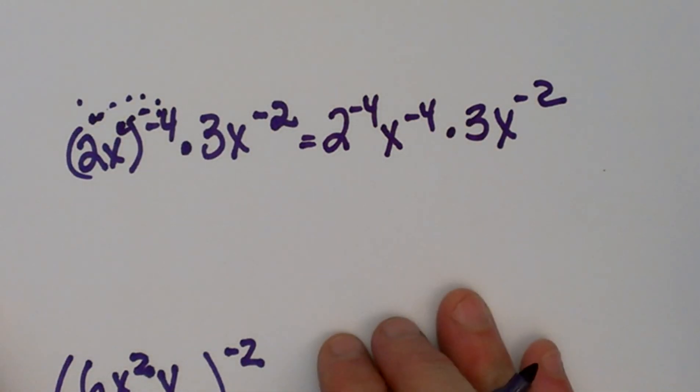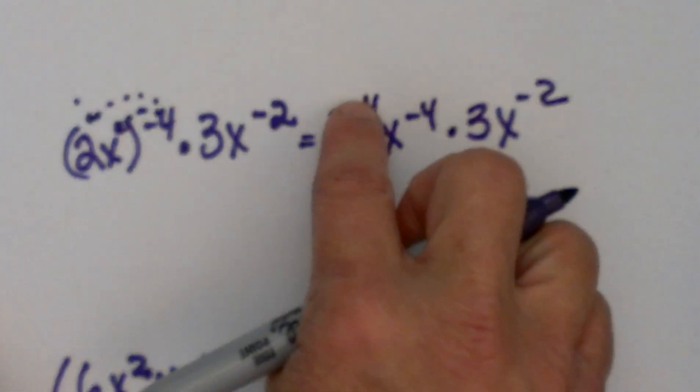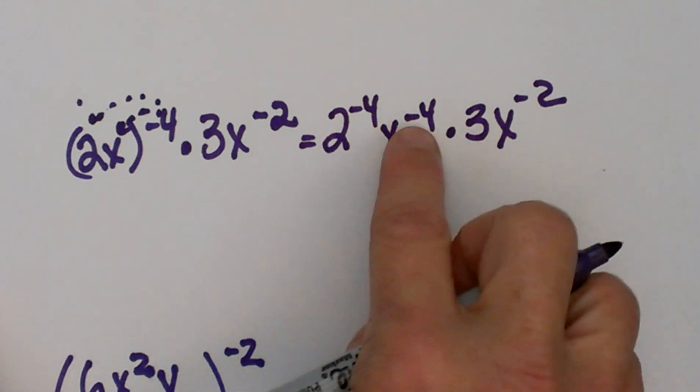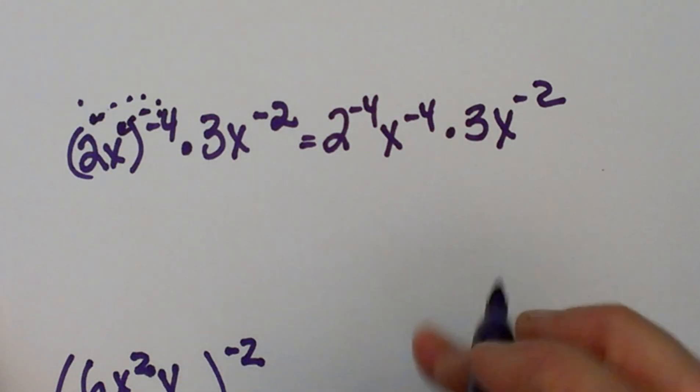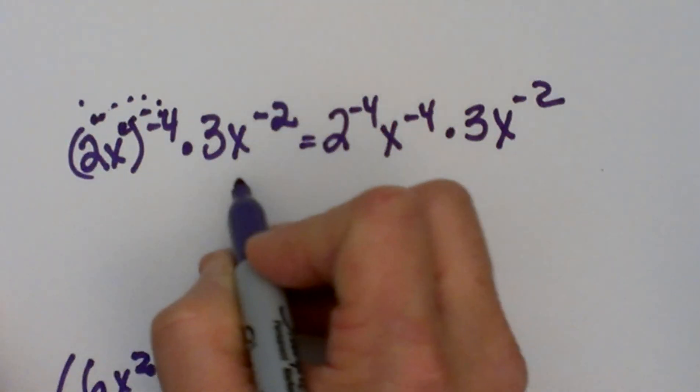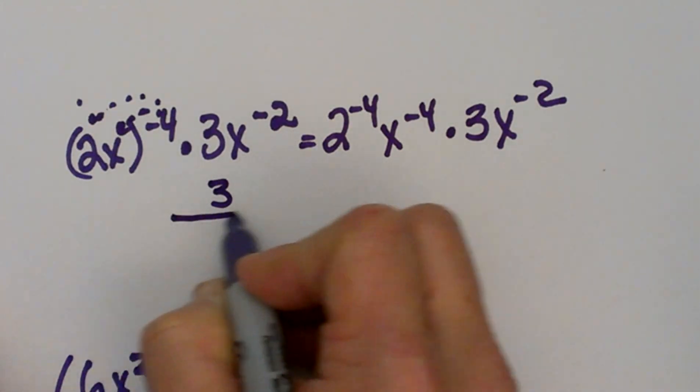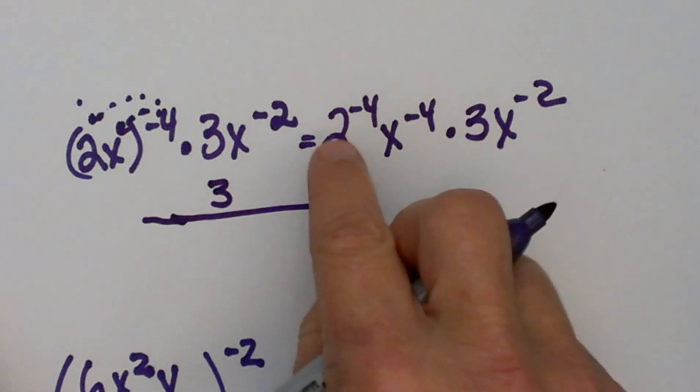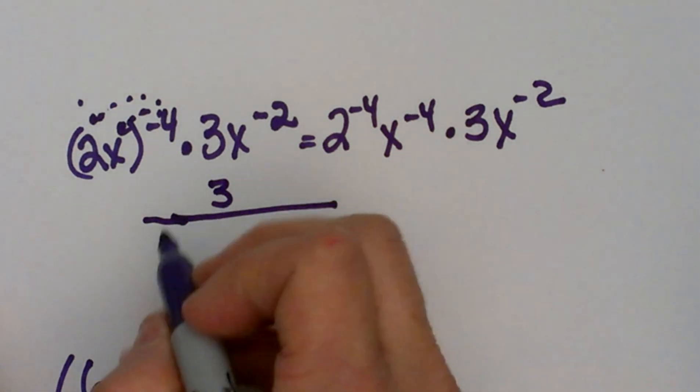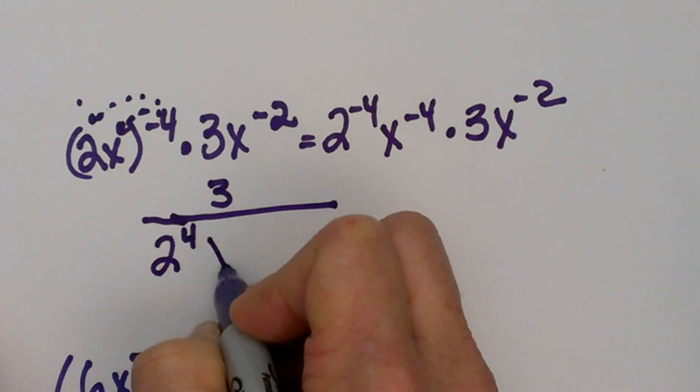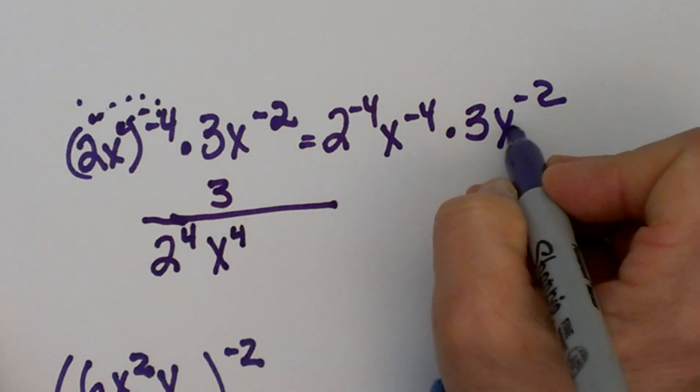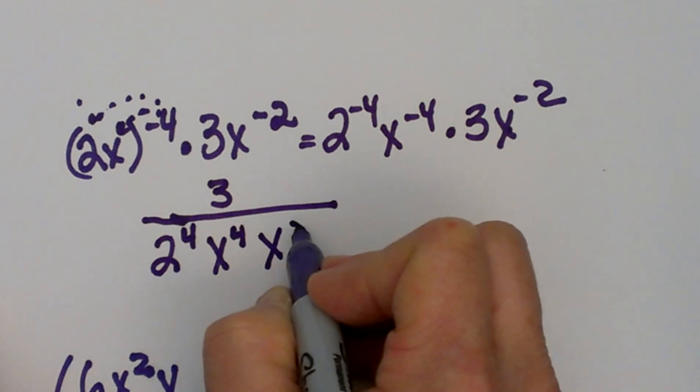Now we're going to apply the rule of wrong position. So we've got 3, we have the 2, this x and this x that are all in the wrong position so they all need to go to the denominator. So the 3 is going to stay in the numerator, and I'm going to move 2^4 to the bottom and it becomes positive, x^4 to the bottom it's positive, and x^2 to the bottom and it's positive.